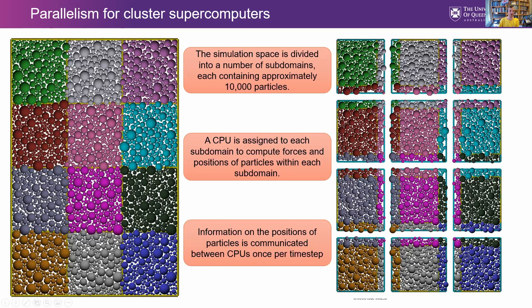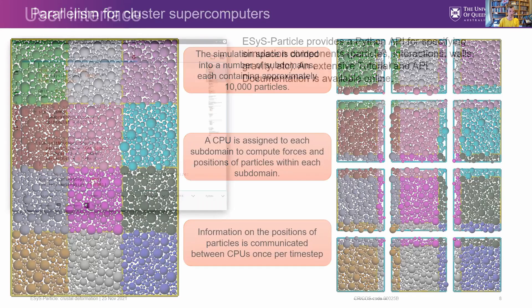For parallelism, we basically break up the big model into lots of smaller models, give each one to a different CPU, and then each CPU does the calculations for that smaller model.